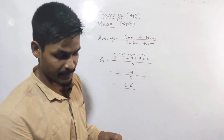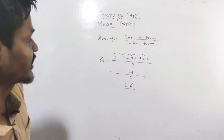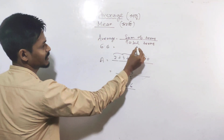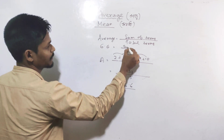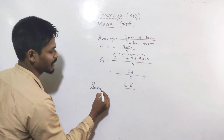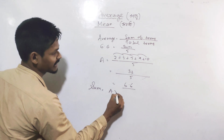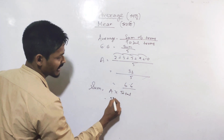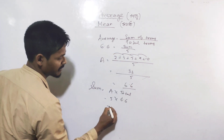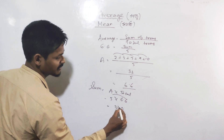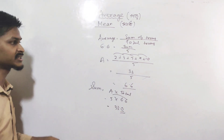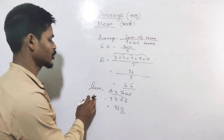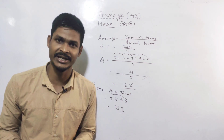In this amount of math, you should know about average. For the average, you need to know: sum of terms divided by total terms gives the average. And conversely, sum equals average multiplied by total terms.